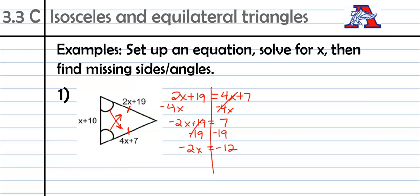And then last step, don't be confused here. Don't try to add 2 to both sides. It's still multiplication. Opposite of multiply by negative 2, divide by negative 2. And when we do that, we're left with X equals positive 6. Negative 12 divided by negative 2, positive 6. So we've set up our equation. We've solved for X. Now we need to find those missing sides.